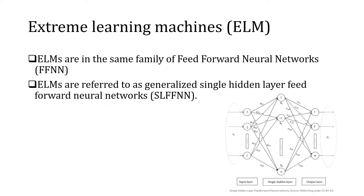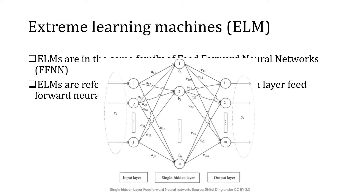Coming into the background of Extreme Learning Machines, these are algorithms which belong to the same family of neural networks as feedforward neural networks. The simple distinction between a feedforward neural network and ELMs is that ELMs have only a single hidden layer, compared to having n number of hidden layers in feedforward neural networks.